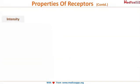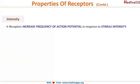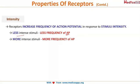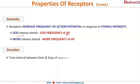The next property is intensity. Receptors increase the frequency of action potentials in response to the intensity of the stimulus. When the intensity of the stimulus is low, the action potential is generated with a lower frequency. When the stimulus has a higher intensity, the action potential will have a higher frequency.